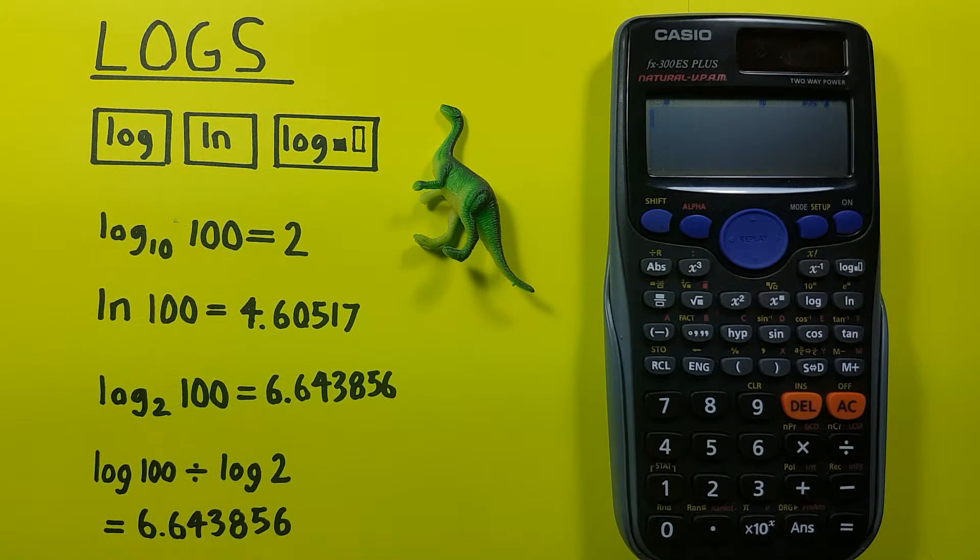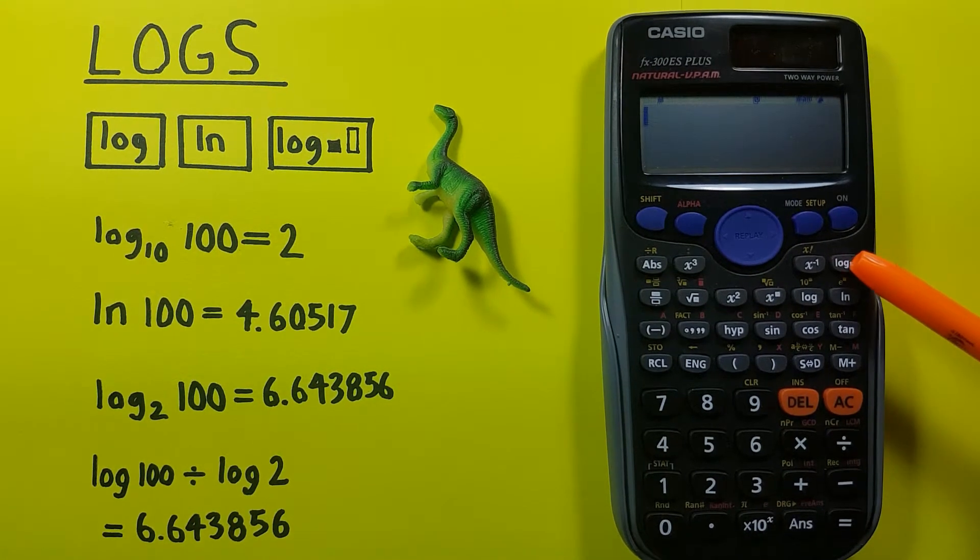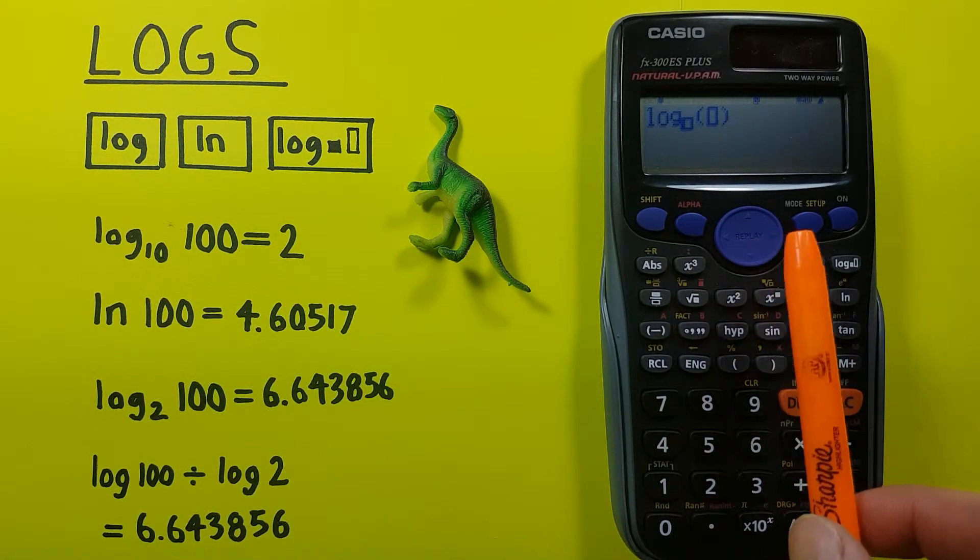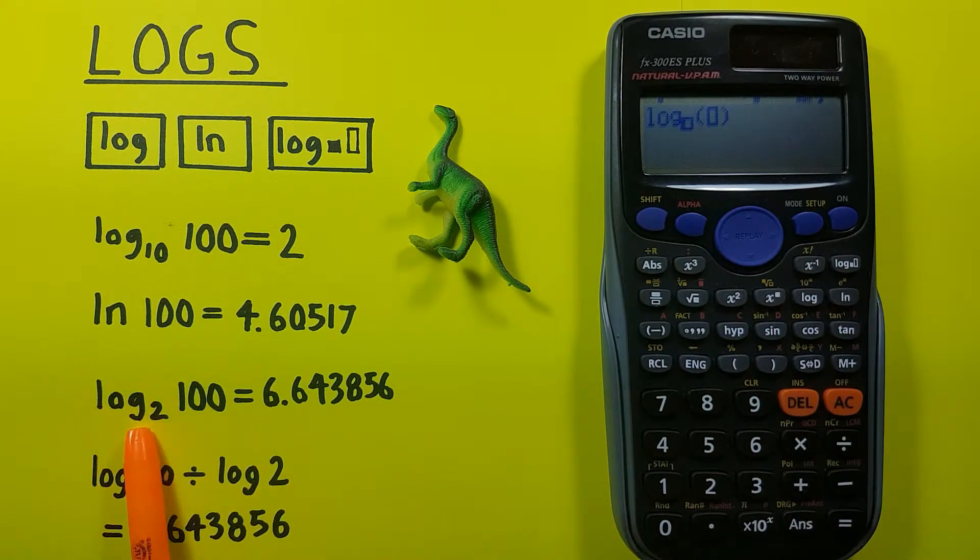Let's say we want to find log base 2 of 100. Well, first we press this key, this miscellaneous log key. Now we see two boxes beside our log. The first one is for the base, so we have log base 2, we enter 2.